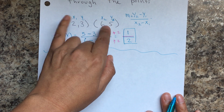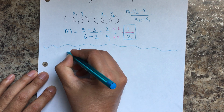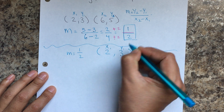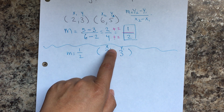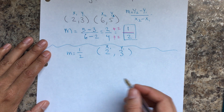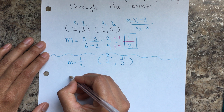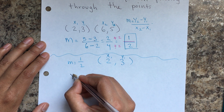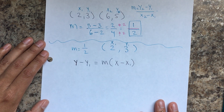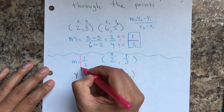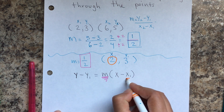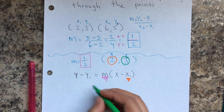Now I have the slope and I can choose any of the two points. I'm going to use 1 half for the slope and choose the first point — it doesn't matter if you choose the second point. You just call it x1 and y1 because we only have one point. If you recall from the previous lesson, you need to use the slope-point formula: y minus y1 equals m times x minus x1. Now that I have the slope, remember that you replace it in here, then replace x1 and y1.